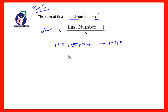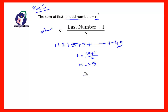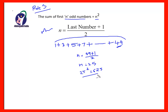First we will find n. Here the last number is 49, therefore n = (49 + 1) / 2 = 25. The sum of the odd numbers from 1 to 50 is n² = 25² = 625.